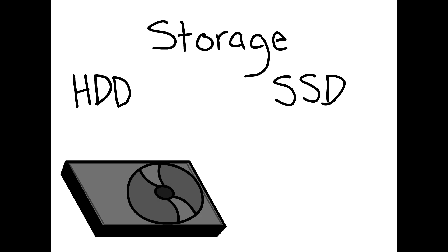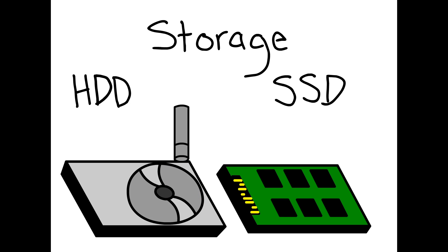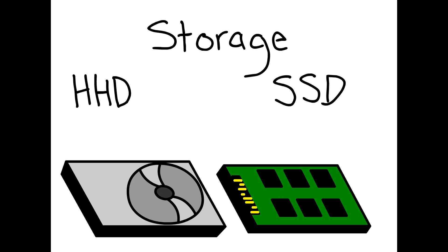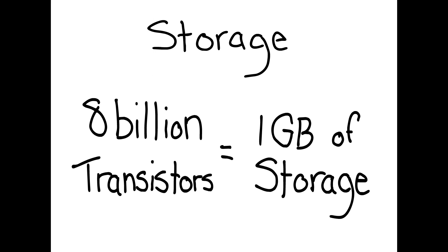Hard disk drives are an older version of storage where a physical disk is spun and information is burned onto it with a laser. Solid state drives are much faster, more durable, smaller, and are made up of transistors. It takes just over eight billion transistors to make one gigabyte of storage.